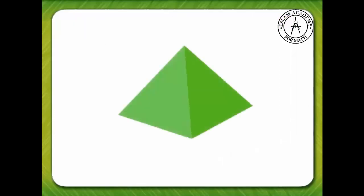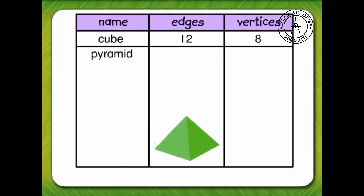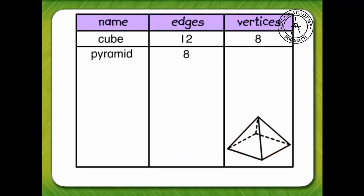Is that another figure I see? Name that figure. It's a pyramid. How many edges does a pyramid have? 1, 2, 3, 4, 5, 6, 7, 8. How many vertices does a pyramid have? 1, 2, 3, 4, 5. A pyramid has 8 edges and 5 vertices.